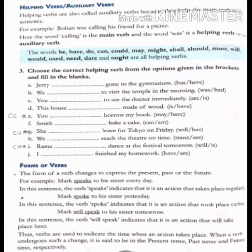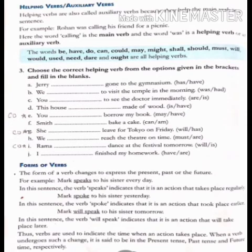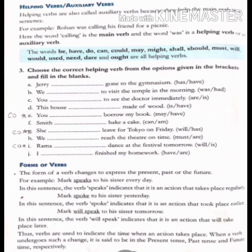Rama dance at the festival tomorrow. Rama will dance at the festival tomorrow. We are talking about tomorrow, future. So we will use 'will' here. Is that clear to you? I finished my homework. With I, what we will use? Have. I have finished my homework.